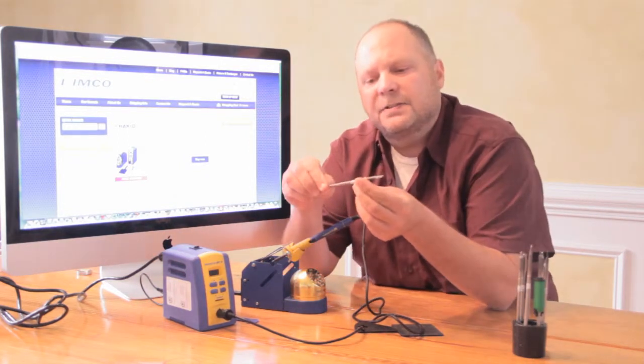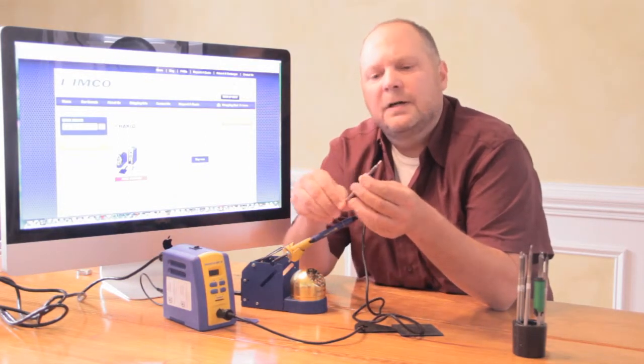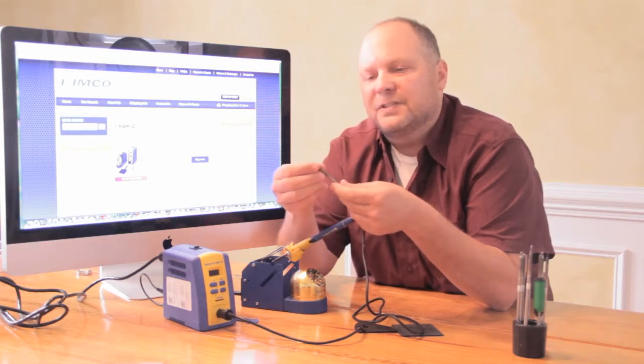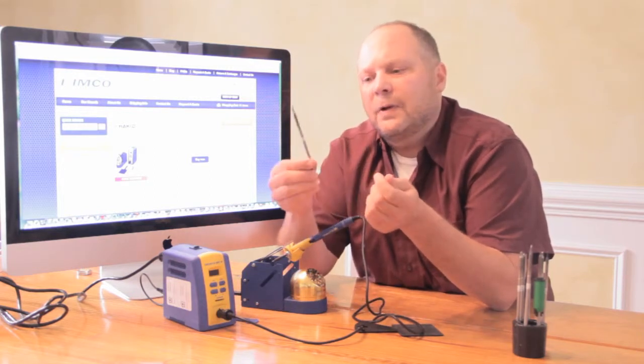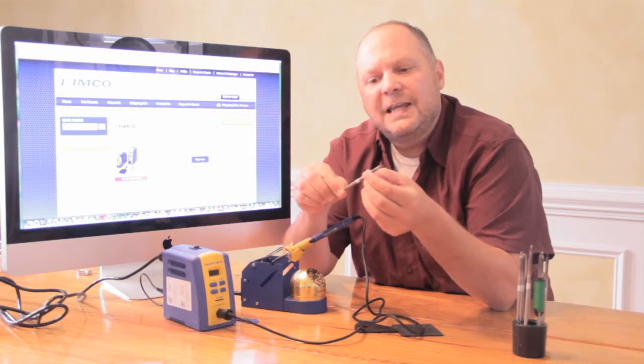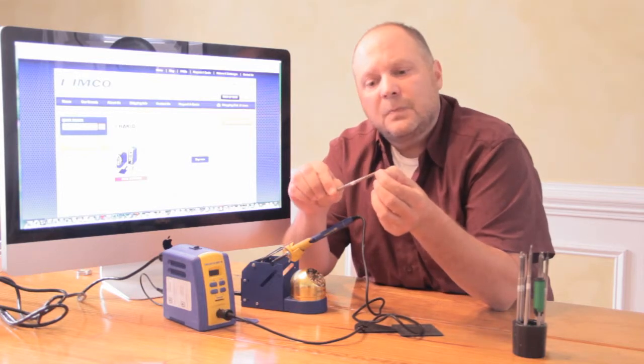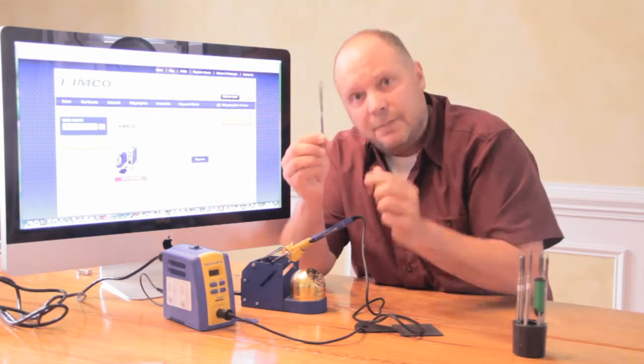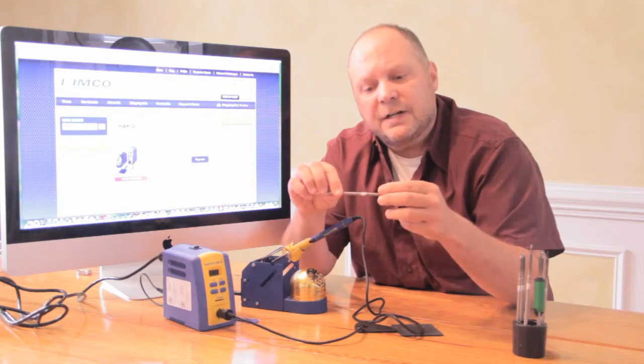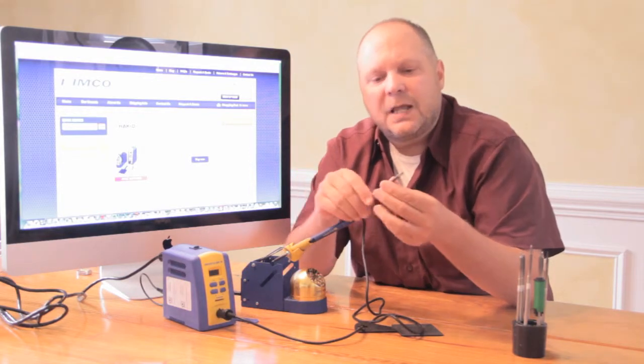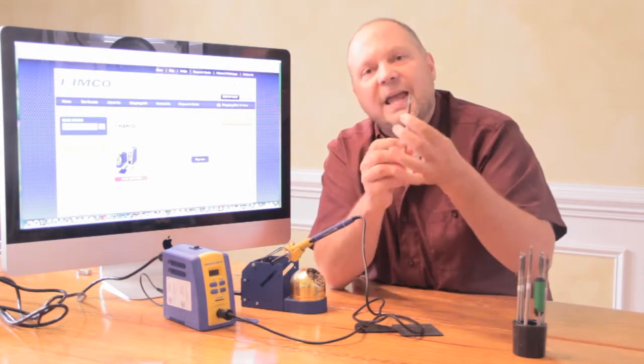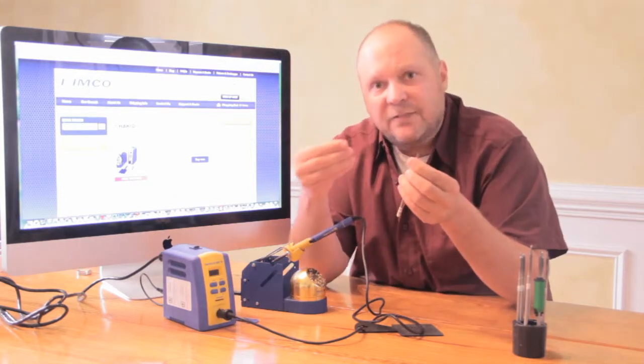So a little bit about the tip, what makes this different. This is a T15 tip. There's all types of different designs. But the great thing about this tip is that you have the heating element built into it. So you have the heating element and tip all in one. And what that does is it reduces any space between the heater and the tip itself. So you have faster thermal recovery.